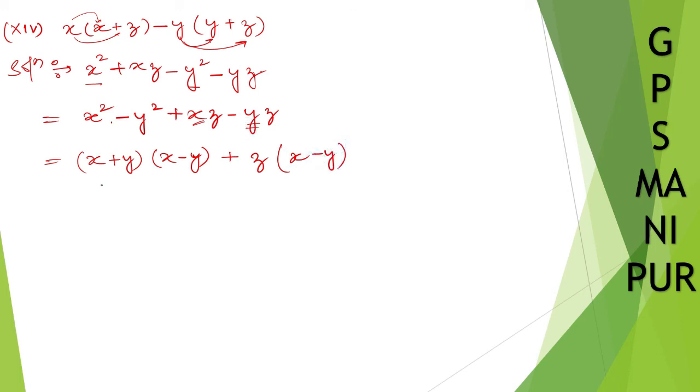Let us take x minus y common. x minus y taken out common. What's left out is x plus y, and x minus y out, so plus z. So x minus y, x plus y plus z. That's all. Thank you so much. We will meet in the next video.